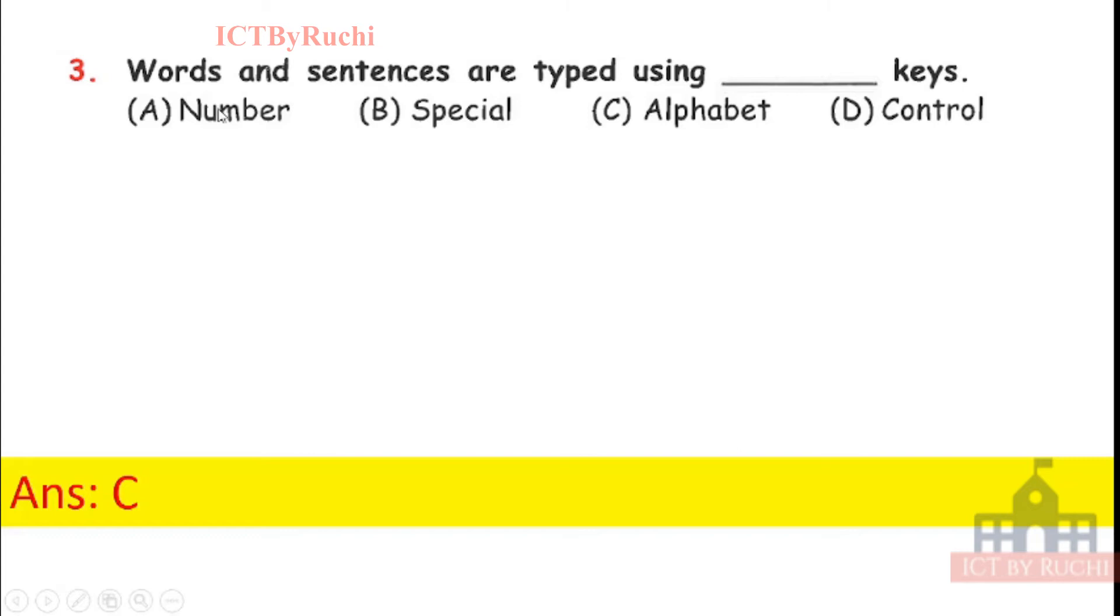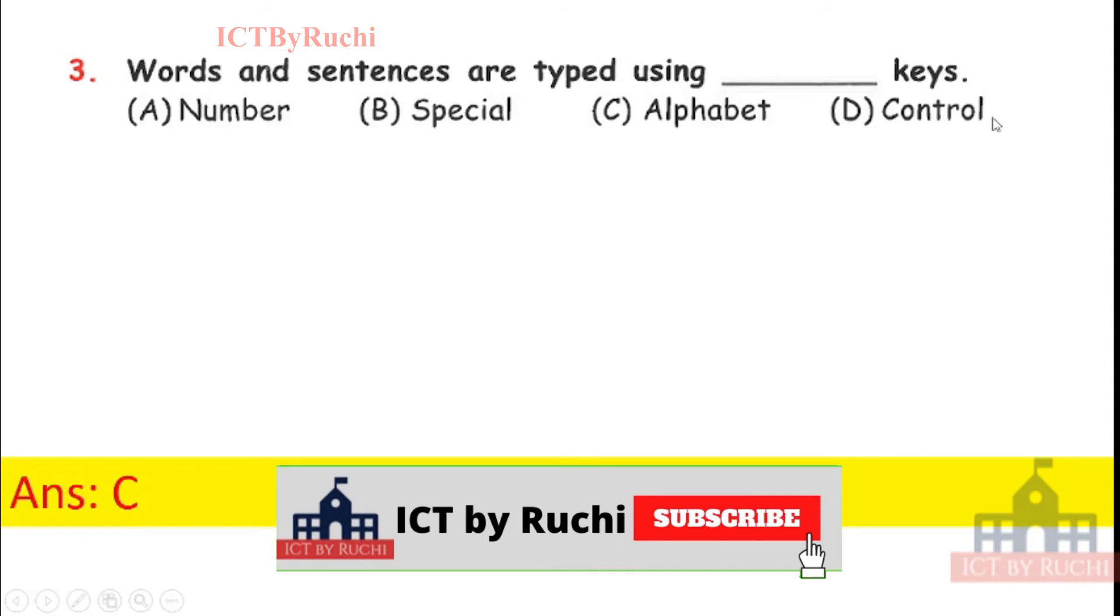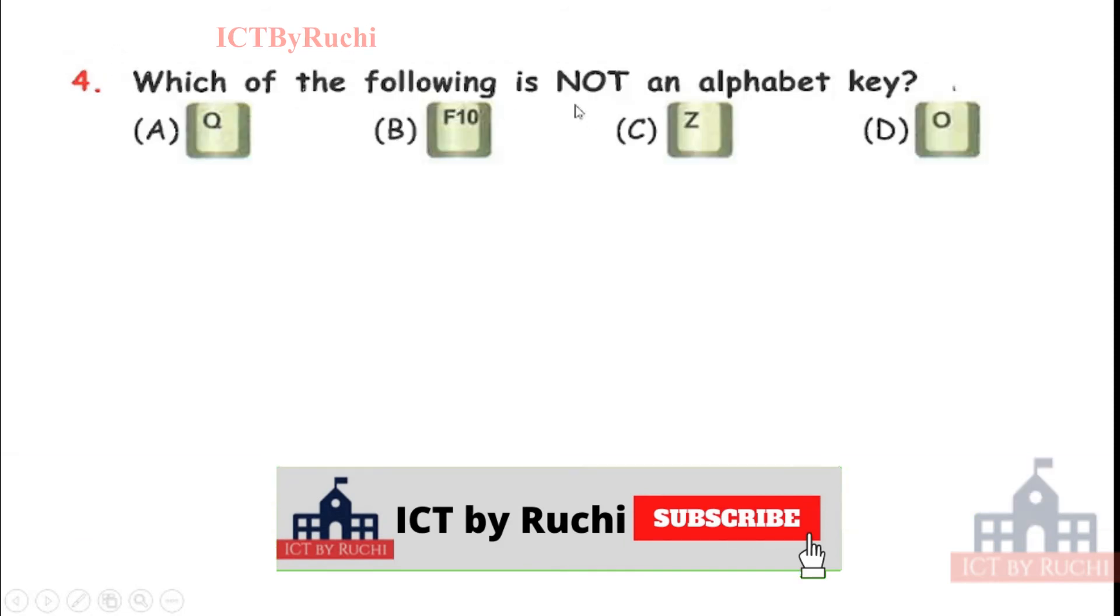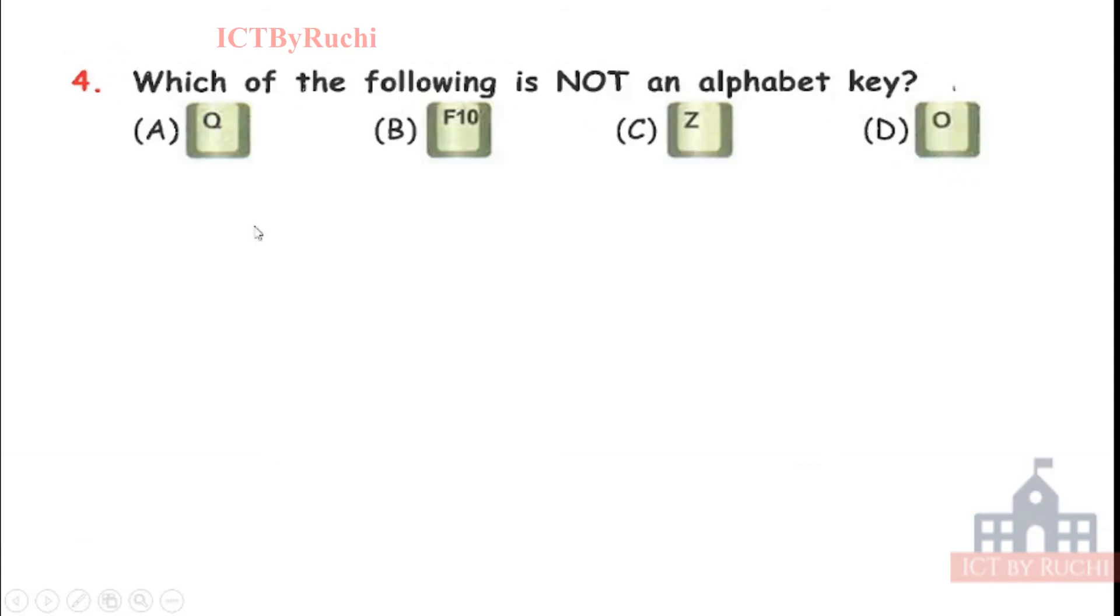Numbers keys are used to print numbers. Special keys are like alt, shift, space, control. They do special operations. Fourth. Which of the following is not an alphabet key? Very easy. Tell me the answer. Answer is B. F10 is not an alphabet key.